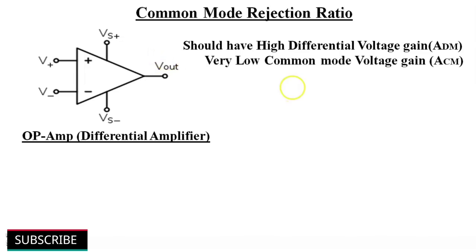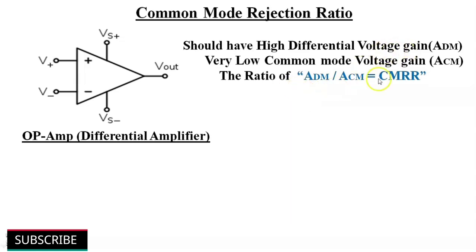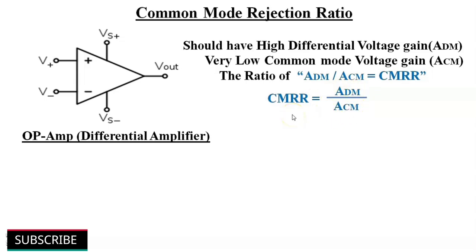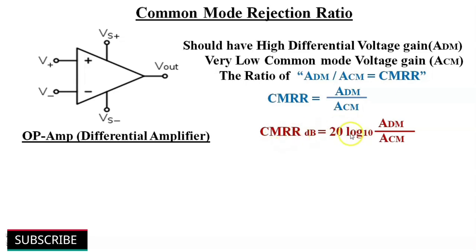The ratio of differential mode voltage gain to common mode voltage gain is called the common mode rejection ratio (CMRR). So CMRR = ADM / ACM. Very often, CMRR is expressed in dB. The decibel measure of common mode rejection ratio is: CMRR(dB) = 20 × log10(ADM / ACM).